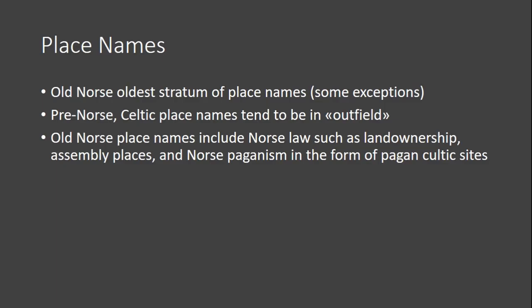The place name situation in Scotland and the Western Isles, as well as northern Scotland as a whole, is quite unique, in the sense that Old Norse is the oldest stratum of place names, besides some exceptions. This means that Old Norse language completely eradicated the Celtic language. There are some pre-Norse Celtic place names, mostly in the outfields — the heathlands, peat lands, and hills. This has been interpreted by Bob Crawford to mean there's some Pictish survival in the outfield. The place names also include, besides settlement sites, terms related to land ownership, assembly places, and religious pagan cultic sites.